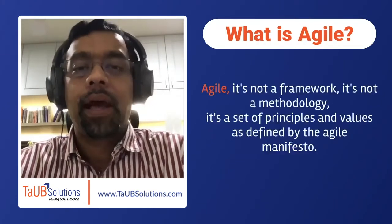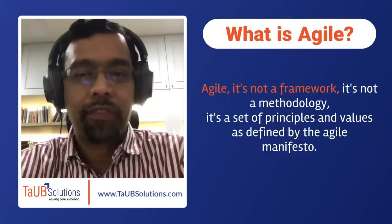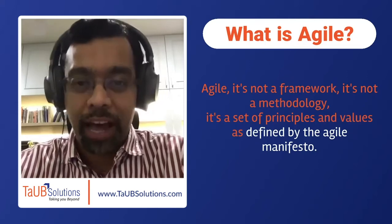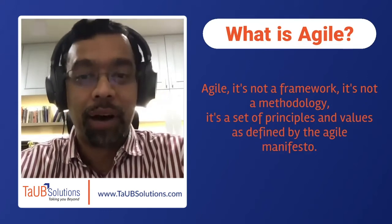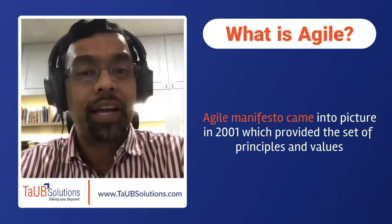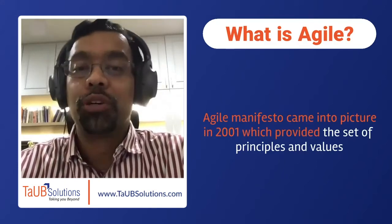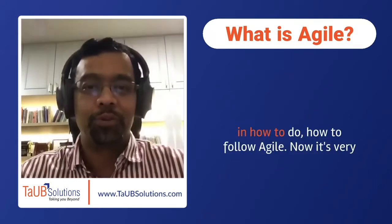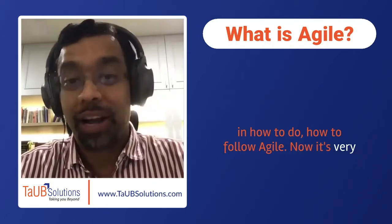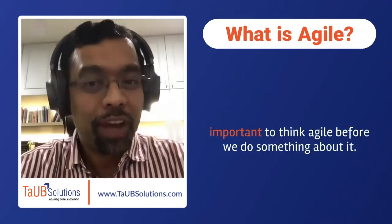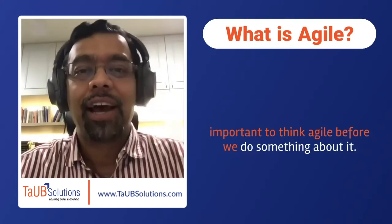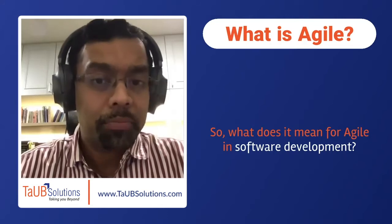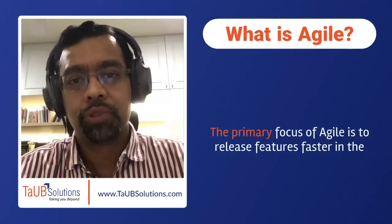What is Agile? Agile is not a framework. It's not a methodology. It's a set of principles and values as defined by the Agile Manifesto. The Agile Manifesto came into picture in 2001, providing the set of principles and values for how to follow Agile. It's very important to think Agile before we do something about it. So what does it mean for Agile in software development?